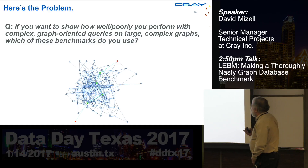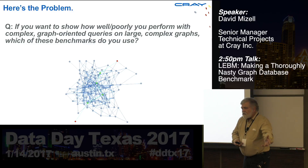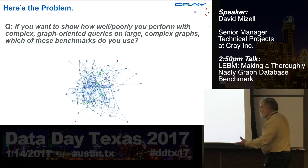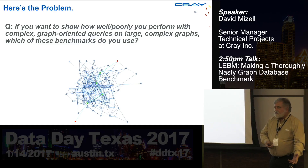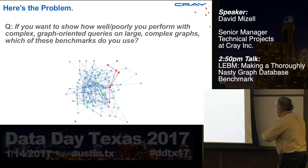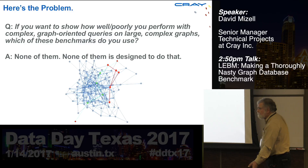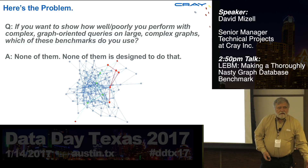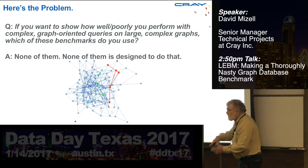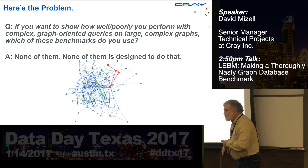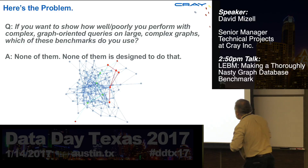So what do we do if we want to show how well we can perform on really large, complex, graph-oriented structures and run complicated graph queries on that data? Which database do you use? The answer is: none of them. None of what we had available is designed to test complex graph queries against complex data. The most complex thing in those LUBM queries is that triangular relationship — show me students that took a class taught by their advisor professor.